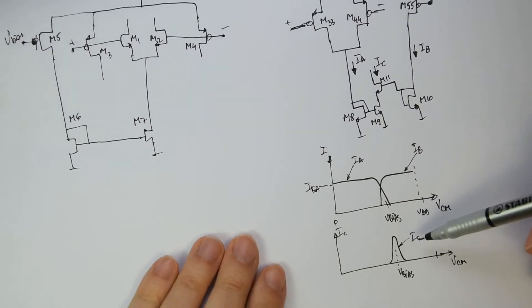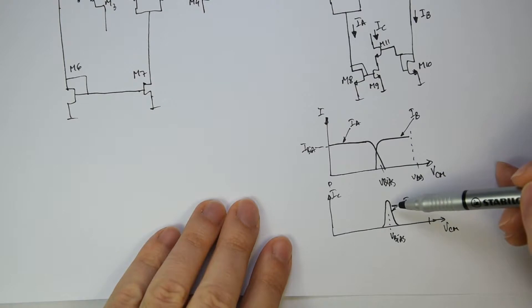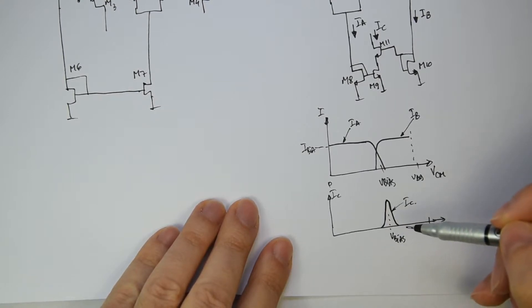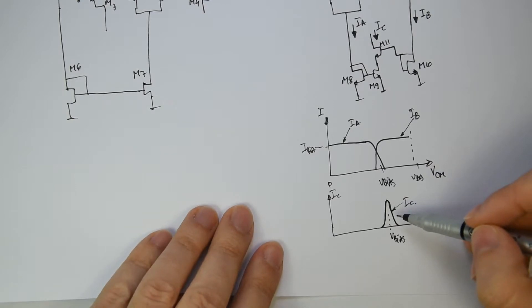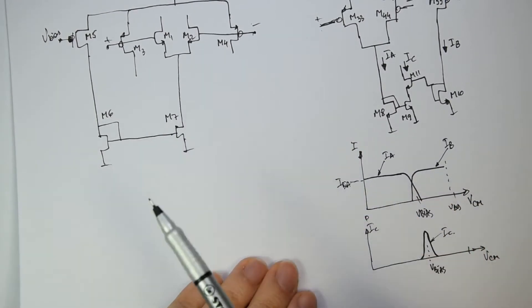You also have to keep in mind that this current, IC current, will actually depend, the slope on each side, the amplitude and so on, will depend on the corners, will depend on the technology, will depend on all the parameters of the transistor. So it is exactly something that is matching, that is good to use to compensate our main circuitry.